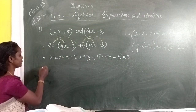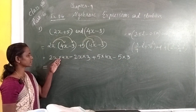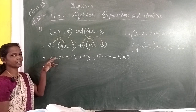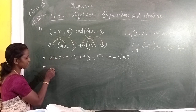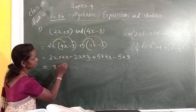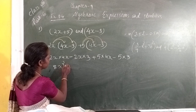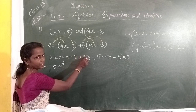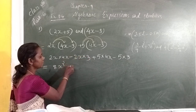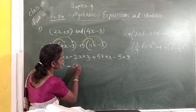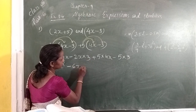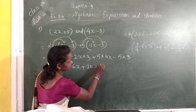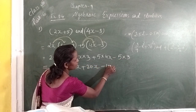Now we multiply and write the answer. For 2x into 4x, first multiply the numerical factors: 2 and 4, so 2 fours are 8, then x into x is x squared. Next, 2x into 3 — one is negative and the other is positive, so its sign is negative — 2 into 3 is 6x. Then plus 5 fours are 20x. Then minus 5 threes are 15.